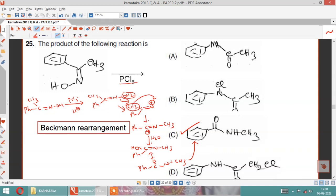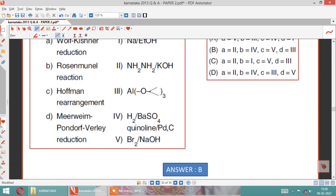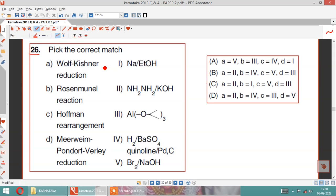Question 26: Match the following. Wolff-Kishner reduction uses NH2-NH2 as reagent. Rosenmund reduction uses barium sulfate BaSO4 with H2 and palladium catalyst. Hofmann rearrangement uses Br2, NaOH. Meerwein-Ponndorf-Verley reduction uses aluminium isopropoxide. Hence option B is correct.